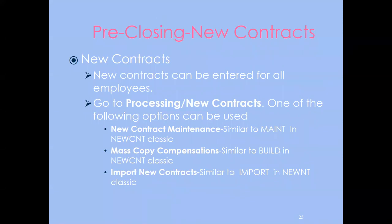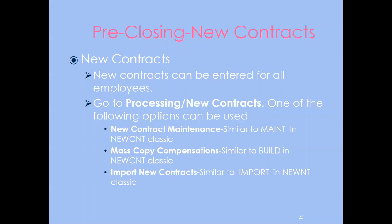New contracts can be entered for all employees at this time. Unlike classic, you can put your contracts in and push them when ready — the system knows when to pick them up based on the inclusive beginning and ending dates. You don't have to wait for the last payroll. Under Processing > New Contracts, you can use New Contract Maintenance (similar to classic maintenance), Mass Copy Compensation to build multiple contracts at once by pay group, or Import if your district uses spreadsheets.